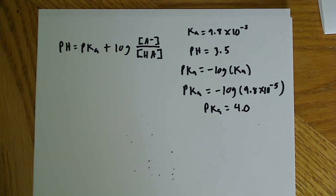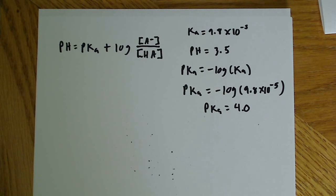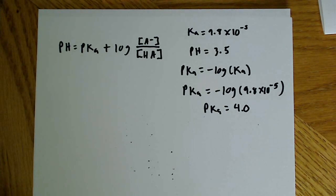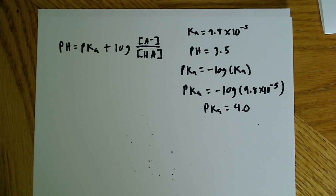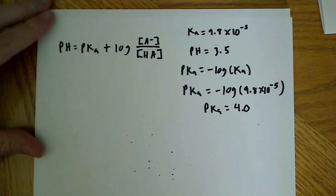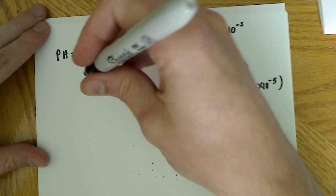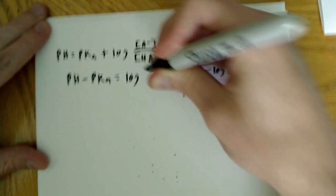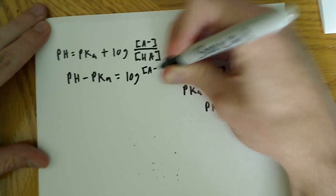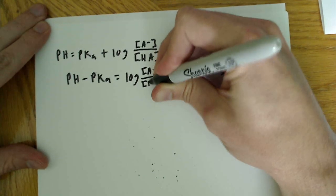So, now we pretty much have everything we need to start working with the Henderson-Hasselbalch equation. We'll do that and start with some algebra to isolate the terms we want, which is the concentration of the deprotonated and the concentration of the protonated. So, to do that, we'll say pH minus the pKa is equal to the log of A minus over HA.